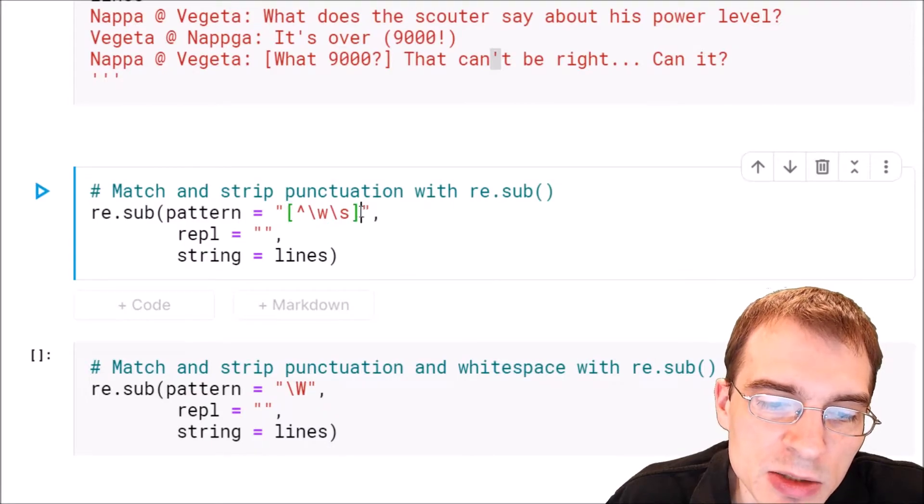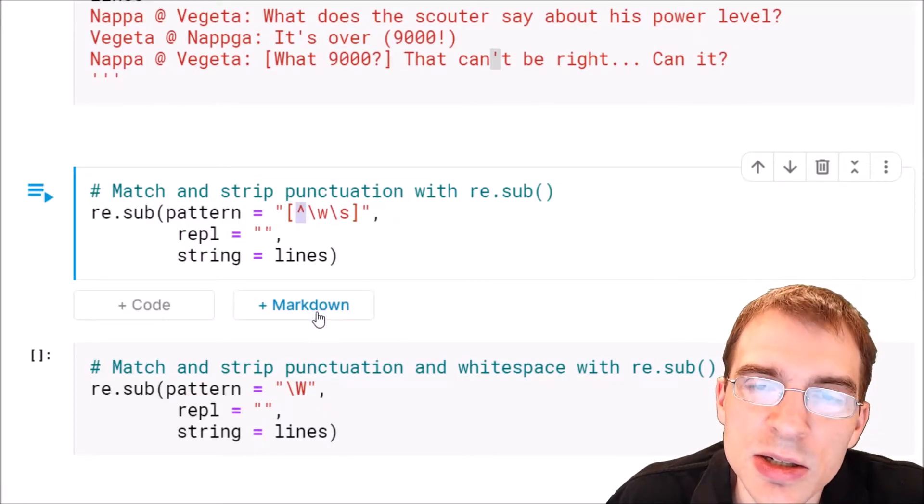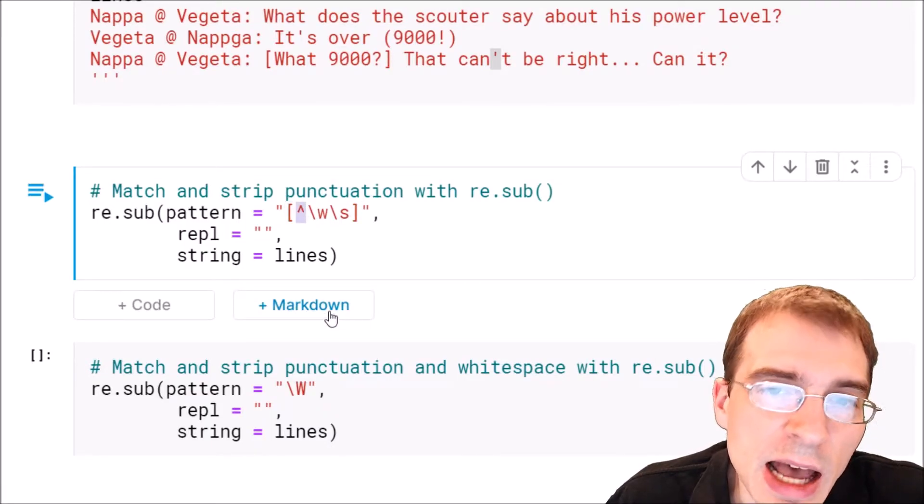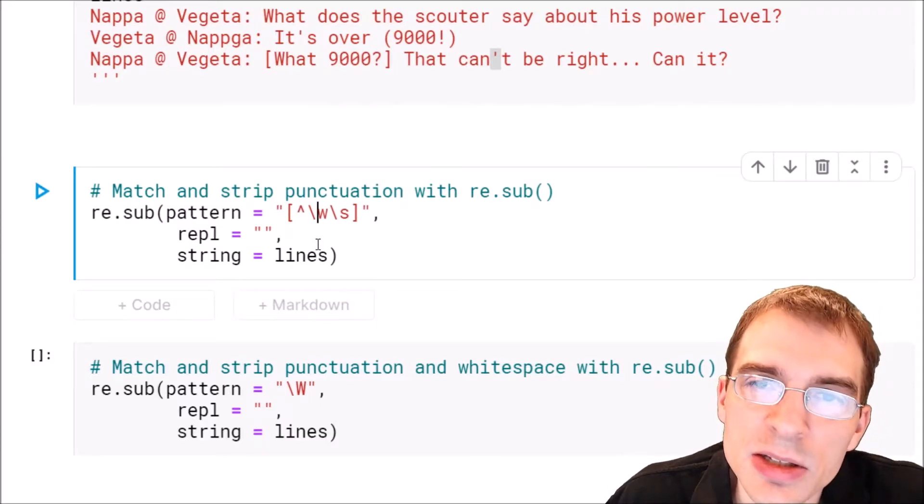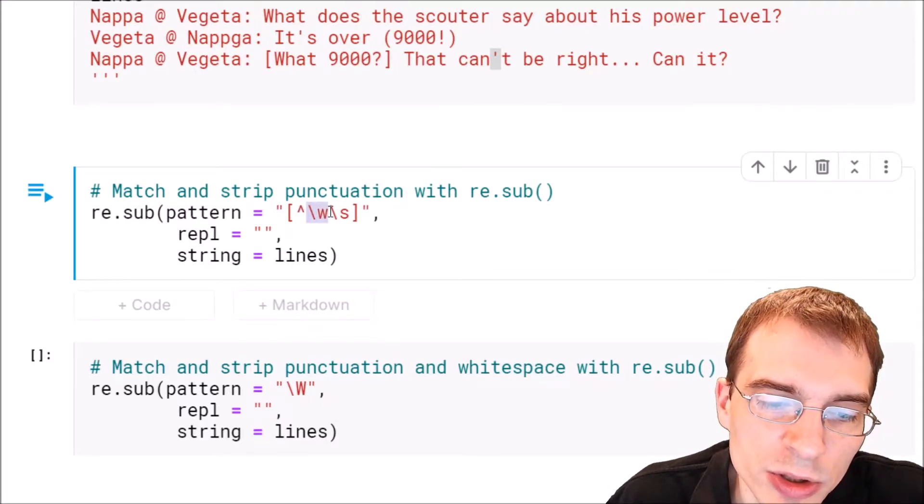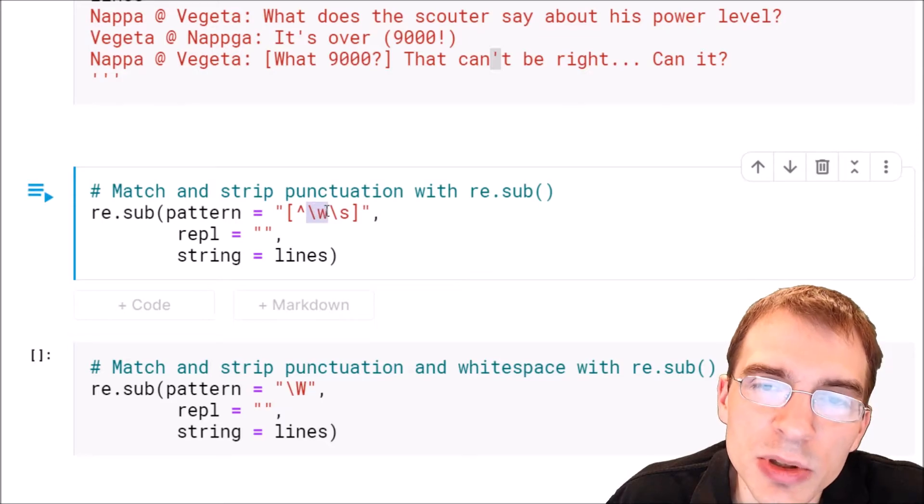Within brackets, we can say caret, and that says match anything that is not these things. And the things that we don't want to match are word characters. The slash w, lowercase w, are word characters, so things that are alphanumeric.